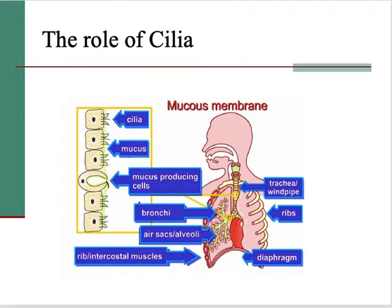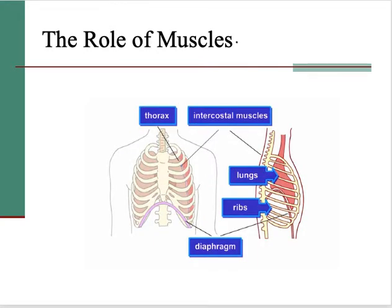Moving on to have a look at the muscles and how they are involved in breathing. As mentioned, there are two different muscles to think about. The thorax, or chest cavity, is defined by the ribs on the outside. The muscles involved in breathing are the diaphragm, shown down at the bottom, and the intercostal muscles, which are located in between the ribs. You'll find all your little intercostal muscles positioned there between each pair of ribs.